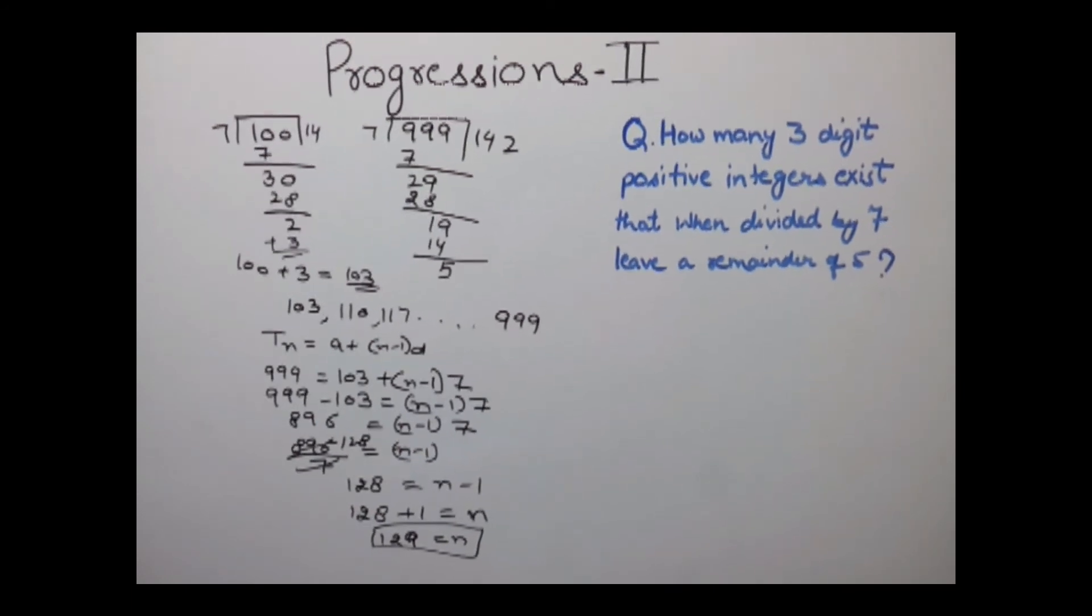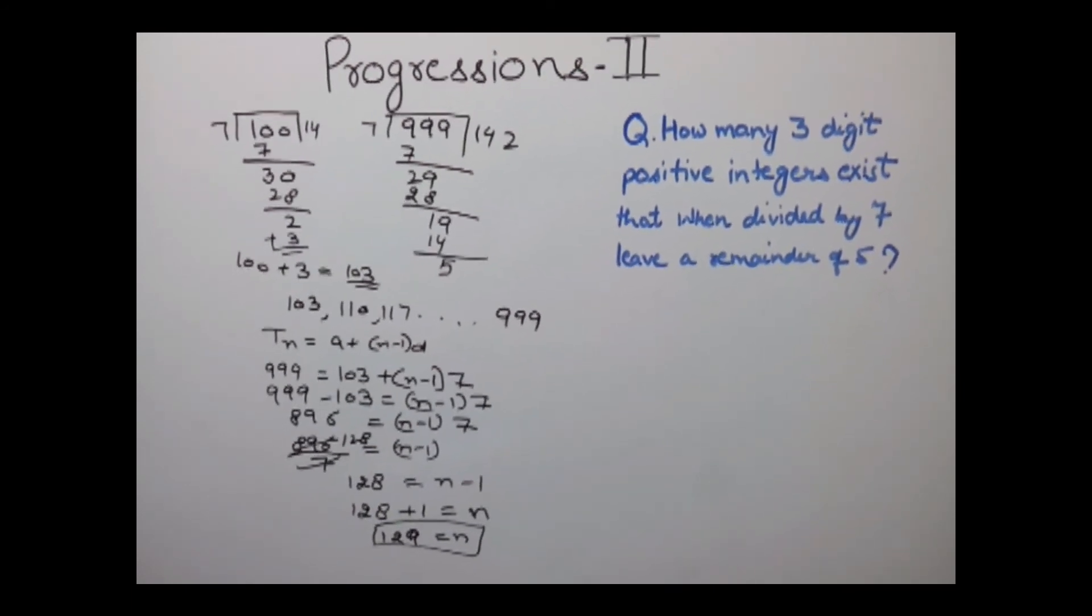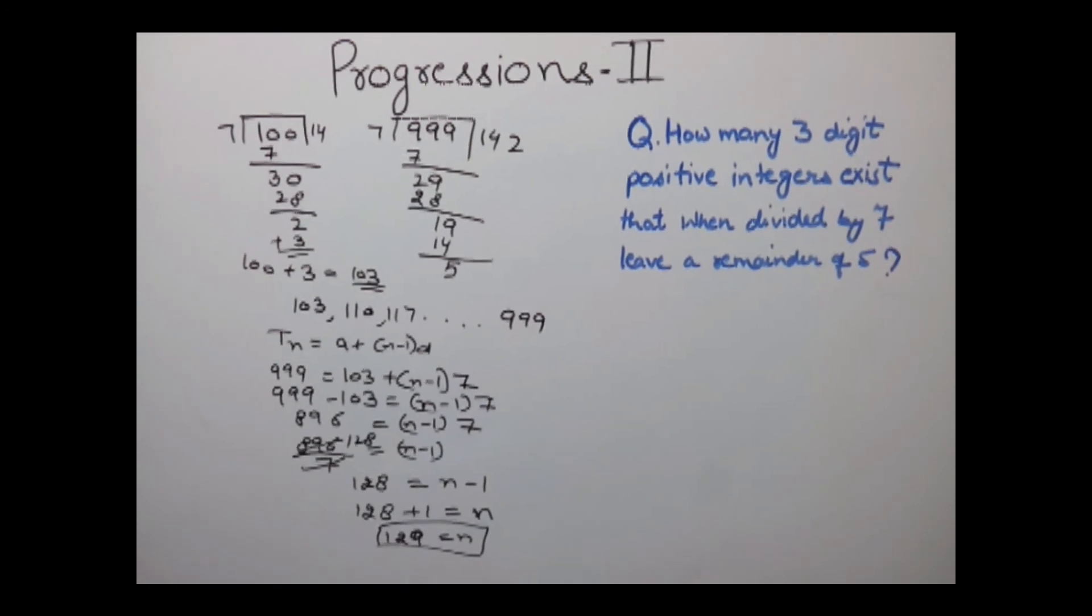This means we have a total of 129 terms which when divided by 7 leave a remainder of 5. I hope you've understood these examples. For more tutorials and tricks you can log in to indiaetu.com.